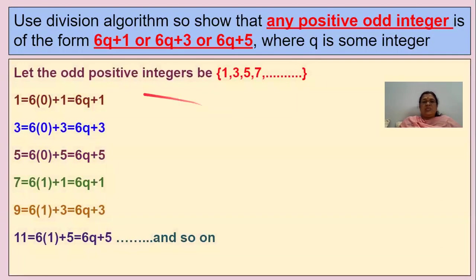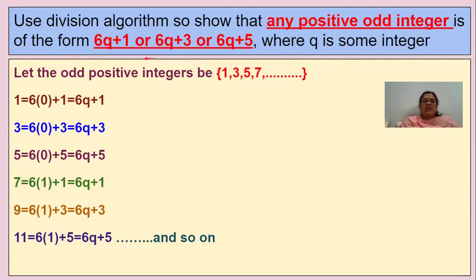The odd positive integers are 1, 3, 5, 7, and so on. You have to take each number like this. According to Euclid's Division Lemma, any number can be written in the form of bq + r. When you divide a number with another number you can write it in the form of bq + r — that is the division lemma.